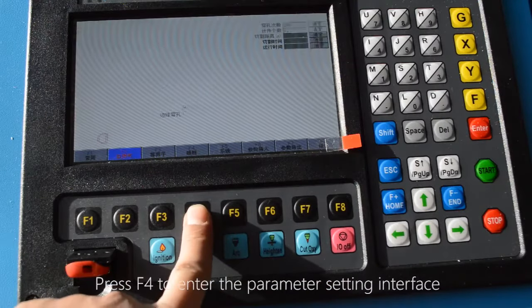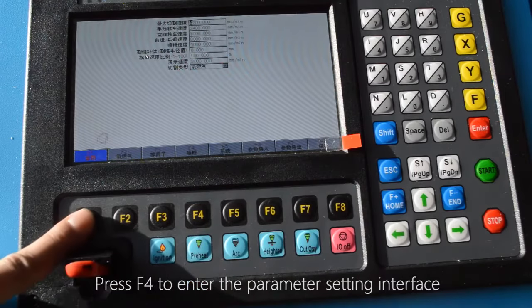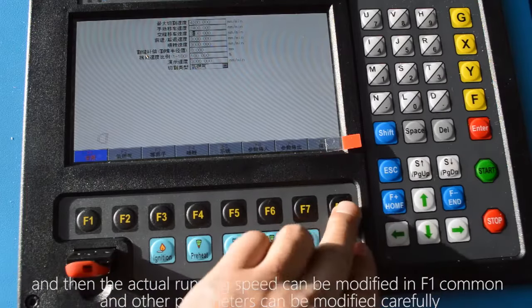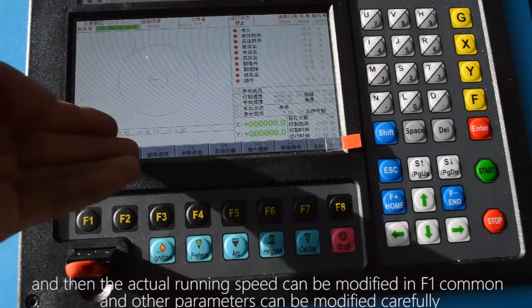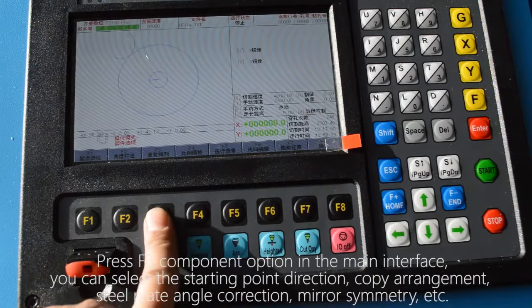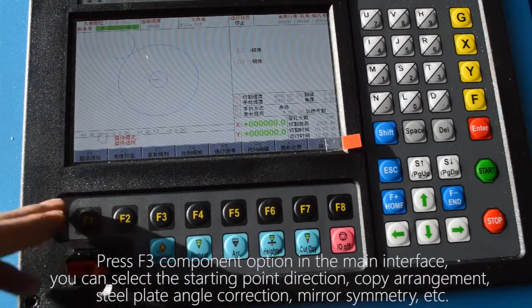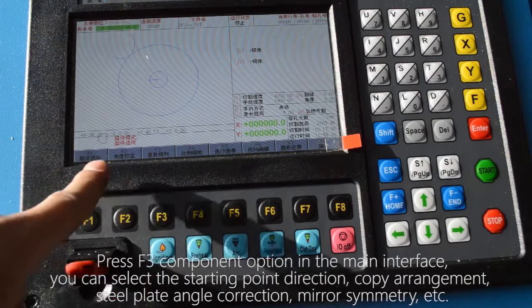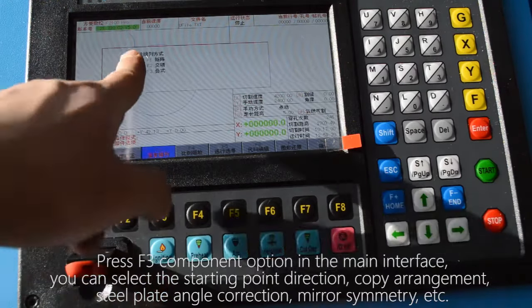Press F4 to enter the parameter setting interface and then the actual running speed can be modified in F1 common and other parameters can be modified carefully. Press F3 component option in the main interface. You can select the starting point direction, copy arrangement, steel plate angle correction, mirror symmetry, etc.